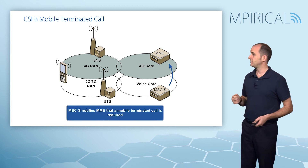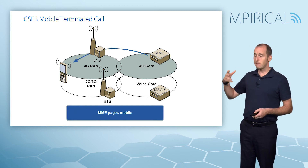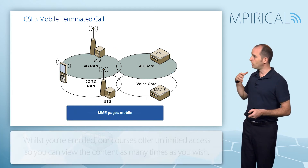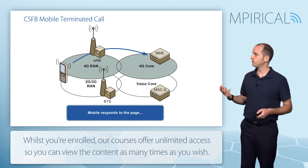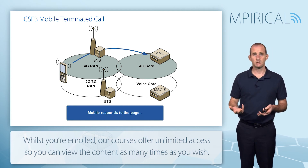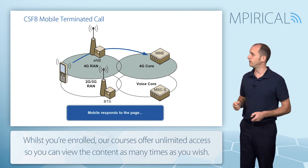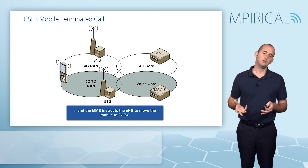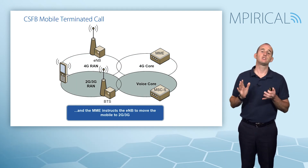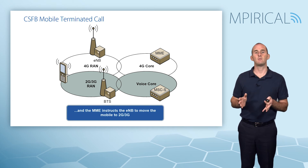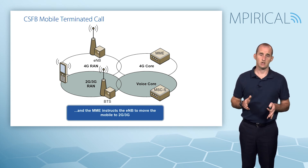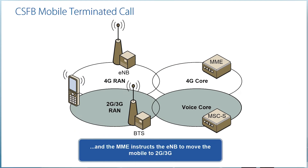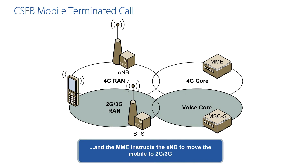This triggers the MME to page the mobile. The mobile responds to the paging message, and once again the MME instructs the eNodeB to send that mobile subscriber to 2G or 3G. They arrive on 2G or 3G and then conduct a regular mobile terminated call procedure.